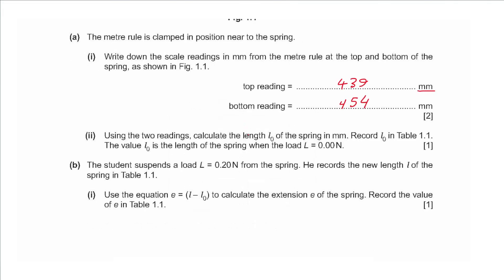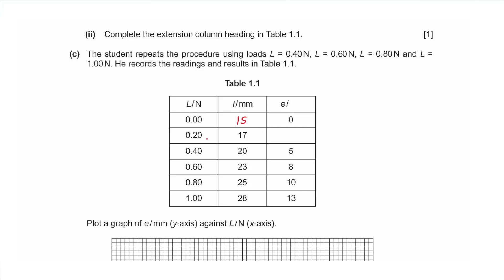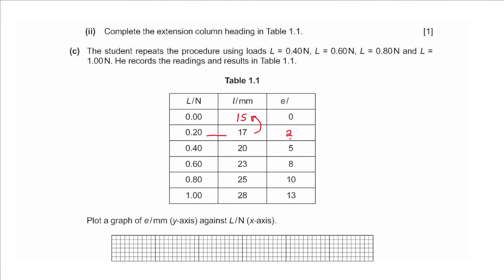Part b says the student suspends load L = 0.20 N from the spring. Using e = L minus L0, where L0 = 15, we calculate the extension e at 0.2 N and get an extension of 2 mm. Part b(ii) asks us to complete the extension column heading: millimeters minus millimeters also gives millimeters.